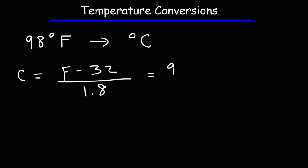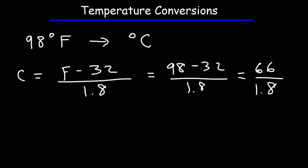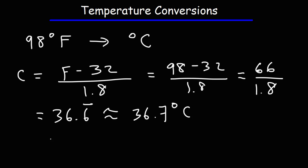So in this case it's going to be 98 minus 32, divided by 1.8. We're going to subtract first: 98 minus 32 is 66. Next, we divide 66 by 1.8, and that gives us 36.6 repeating, which we can round to 36.7. So the Celsius temperature is 36.7 degrees.